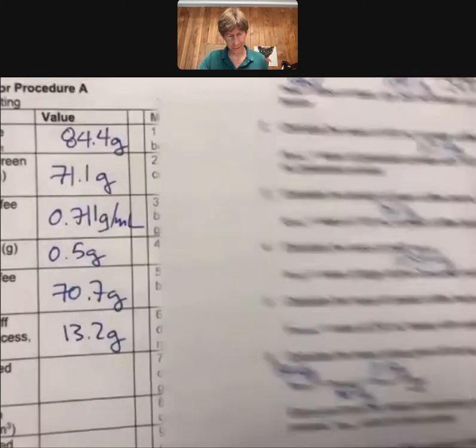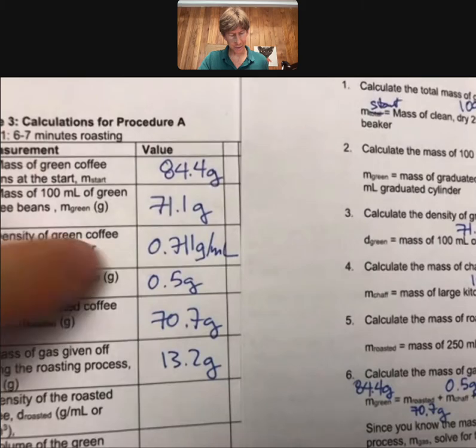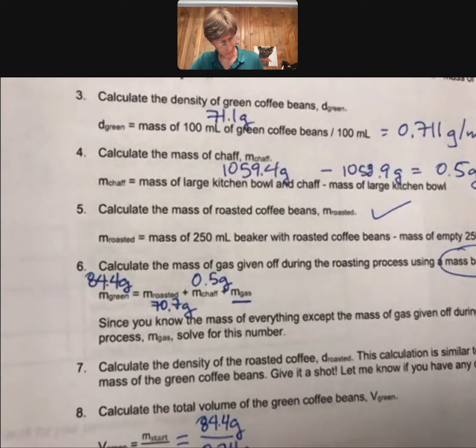All right, that's our mass start. Mass start. We know the density of our green beans at 0.711 grams per milliliter.